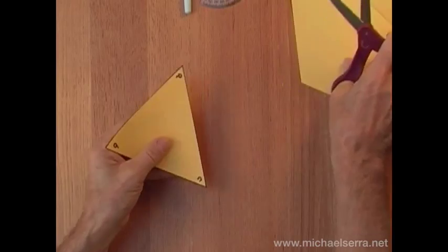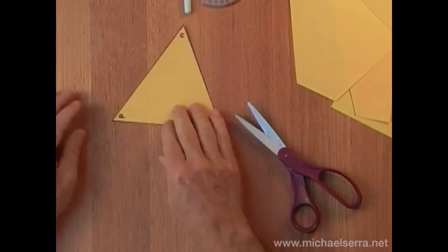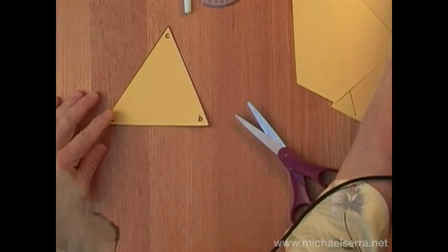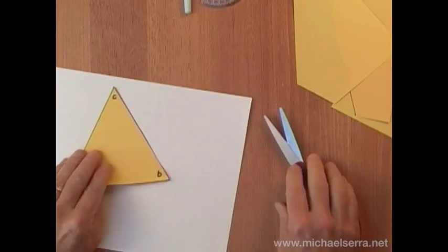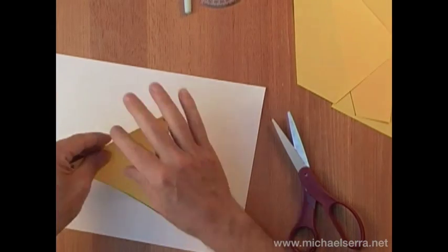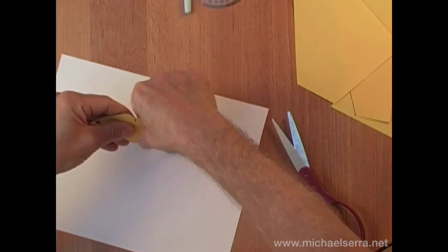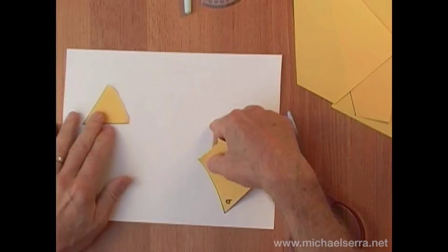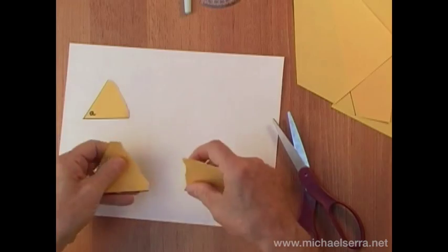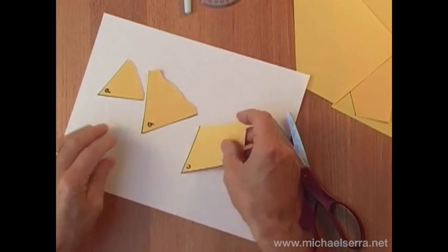So I've labeled the three interior angles of the triangle. Now I'm going to tear them off. And we're going to see what they add up to. Angle A, angle B, and angle C.